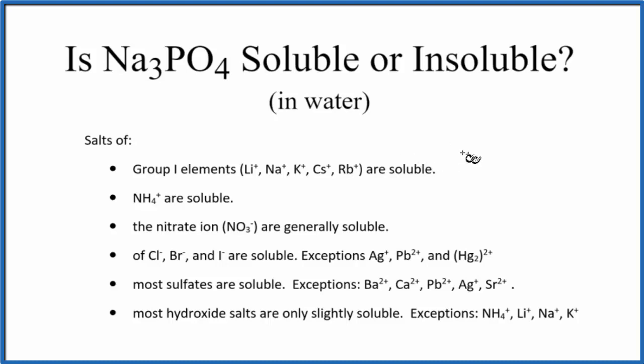First, we could have memorized the solubility rules. This is a brief set of the solubility rules. As we look down the rules, the first thing says group 1 elements. Sodium is in group 1. So when sodium forms bonds with other compounds here, we're going to have soluble compounds. According to the solubility rules, we expect Na3PO4 would be soluble in water.